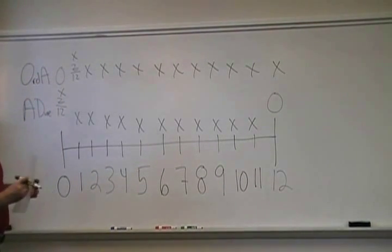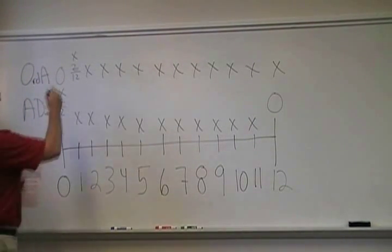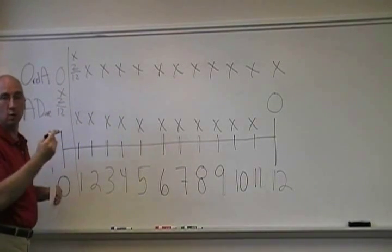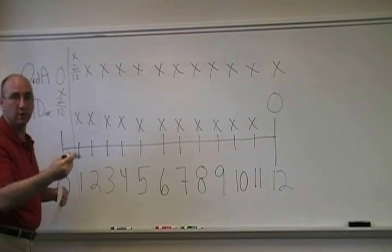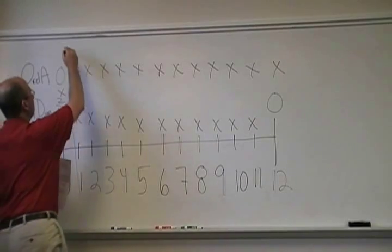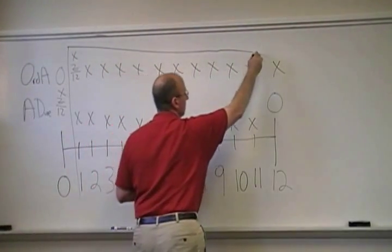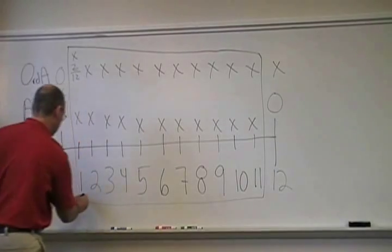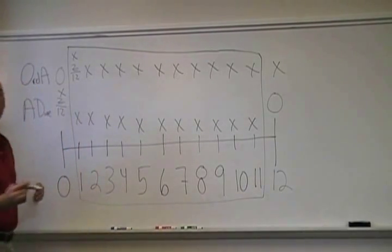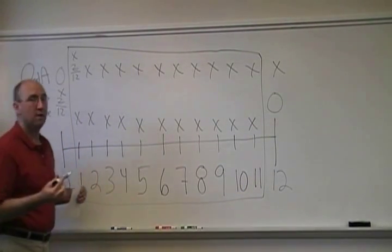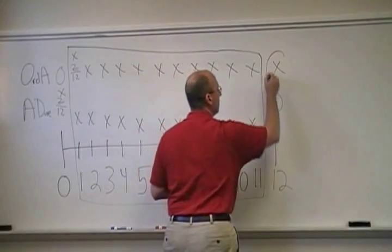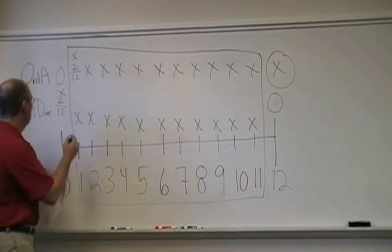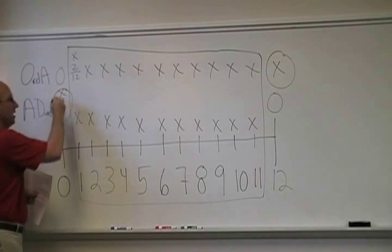Under both payment plans, he's going to get a payment in months 1, 2, 3, 4, 5, 6, 7, 8, 9, 10, and 11. However, with the ordinary annuity, the 12th payment would come in a year. With the annuity due, the 12th payment would come today.